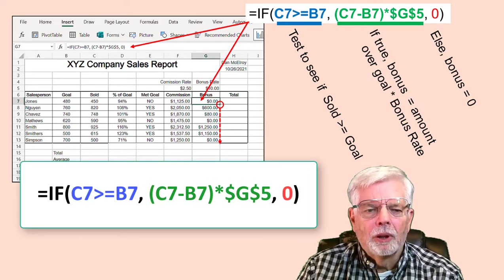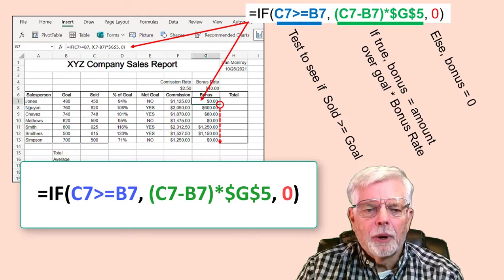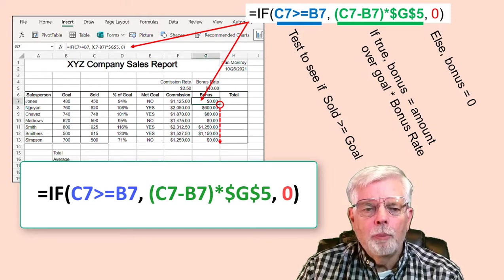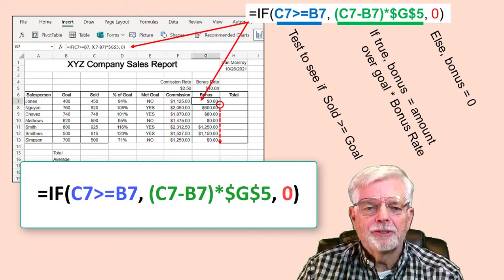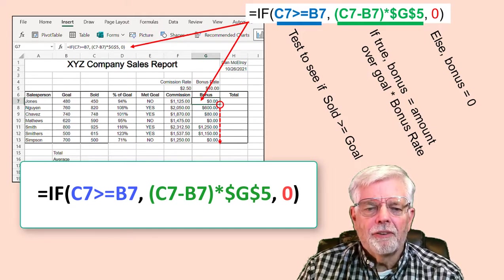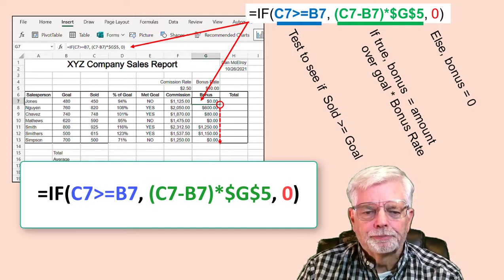The IF function that goes here is a little more complicated than the IF used when computing Met Goal. Here it is: =IF(C7>=B7,(C7-B7)*$G$5,0). That is: equal, IF, open parenthesis, C7 greater than or equal to B7, comma, open parenthesis, C7 minus B7, close parenthesis, times $G$5, comma, 0, close parenthesis.